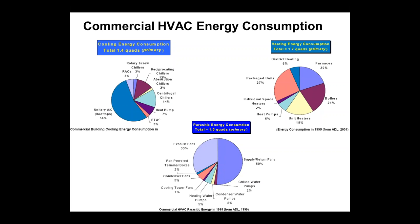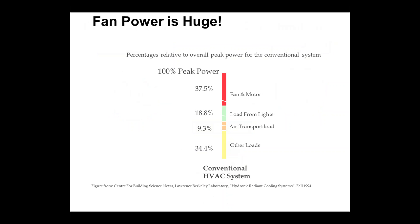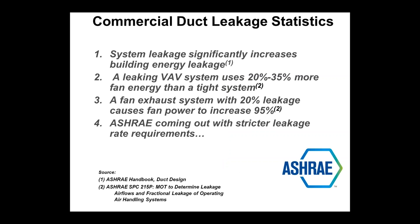The United States and Canada are probably the main places in the world where ducted systems dominate. In Europe and Asia you'll see a lot of water-based and refrigerant-based distribution systems. Here in the U.S. we've got a lot of ductwork, and unfortunately that ductwork leaks quite a bit. For fan and motor energy specifically, 37% of peak power is fan and motor related. If we can do anything to chop that down — and most of you know the fan laws — it'll have a huge effect on power consumption.